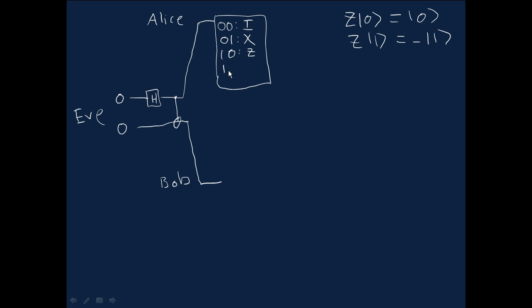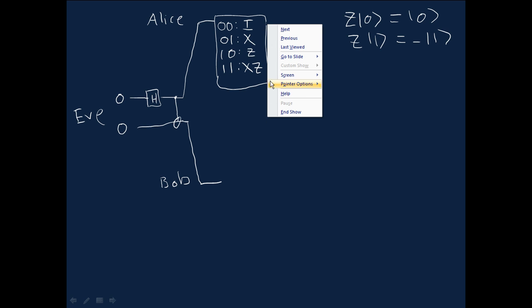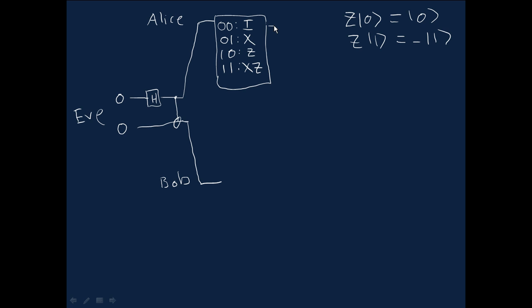And finally, if she has the classical bits 11, she'll do a Z gate followed by an X gate. So once she's done this, once she's encoded this information, this is the way she's doing it, once she's encoded the information in her qubit, she'll send it off over to Bob.